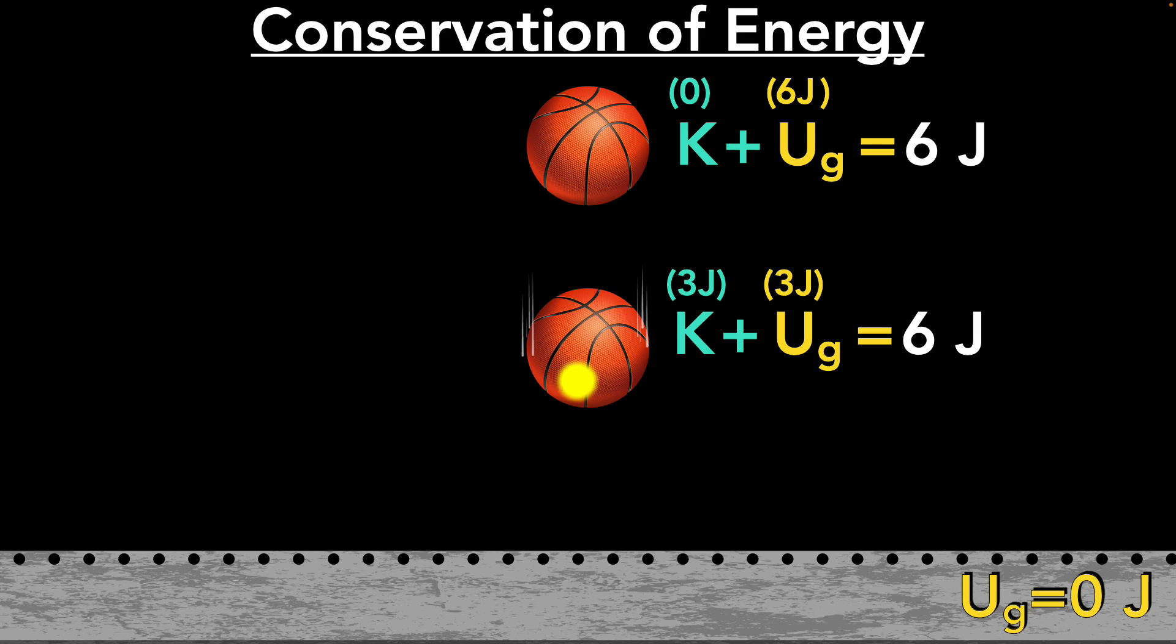It got converted to kinetic energy! The ball is now moving, so it has kinetic energy. And that's what's beautiful about this concept. As the ball falls, the potential energy is converted into kinetic energy. And if we know how much the potential energy is lost, we can figure out how much the kinetic energy was gained. And from that, we can even calculate how fast the ball was moving. That is why I love conservation of energy. It lets us do all kinds of cool calculations.